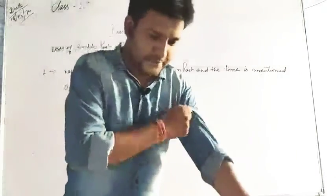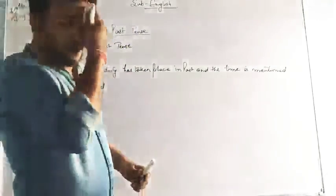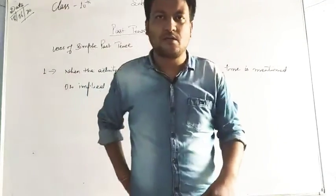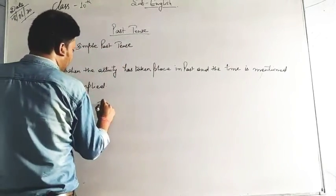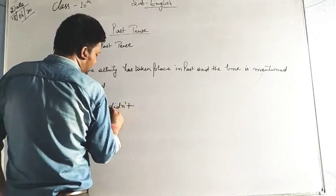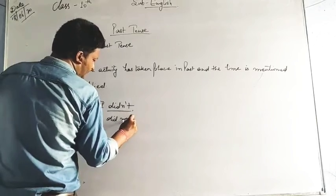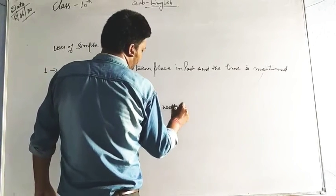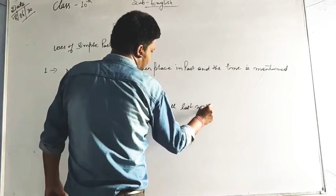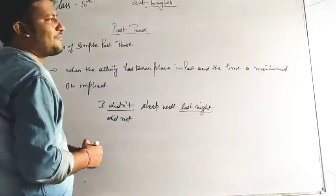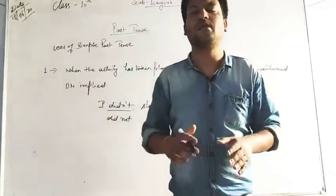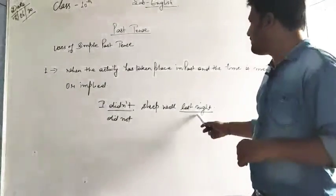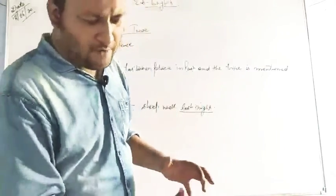When the time is mentioned, for example: 'I didn't sleep well last night.' Here 'didn't' is the contracted form and 'did not' is the normal form. When I say 'last night,' the time is clearly mentioned — it means just the previous night before today's morning. Another example: 'Gandhiji gave a discourse on prayer many years ago.' Here 'many years ago' is the time mentioned, indicating the past.